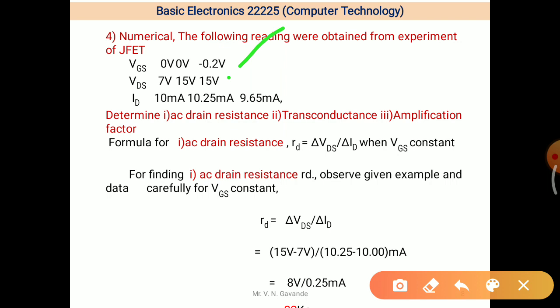And then VDS remained constant 15 to 15, but ID changed to 10.15 milli Ampere or 9.65 milli Ampere. Now look at it. These are the three values of VGS, three values of VDS, and ID having three values. And we have to find out AC drain resistance, transconductance, and amplification factor.